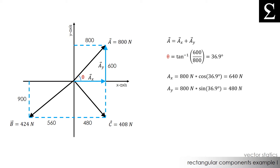We calculate AY to be 480 newtons by multiplying 800 newtons by the sine of 36.9 degrees. Now we know that the magnitudes of AX and AY are 640 and 480 newtons, but we need to write vector A in rectangular component form. Since vector AX is acting to the right along the positive X axis and vector AY is acting along the positive Y axis, we can write vector A is equal to 640 newton i plus 480 newton j.